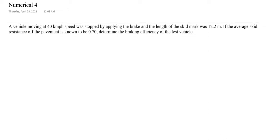Numerical 4. This vehicle is at 40 km per hour speed. So the initial velocity is 40 km per hour, which is 40 divided by 3.6, equal to 11.11 m per second.